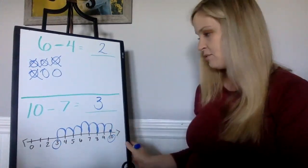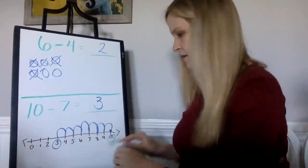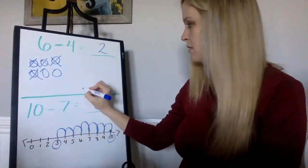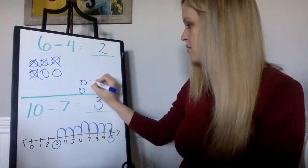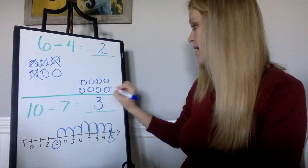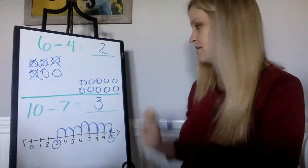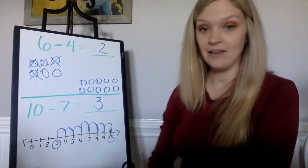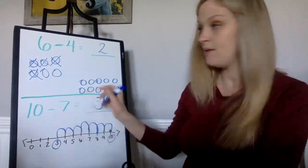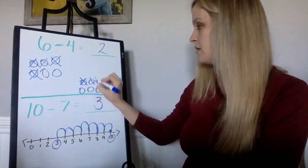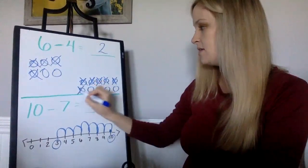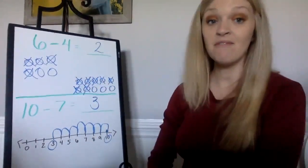So I'm going to draw 10: one, two, three, four, five, six, seven, eight, nine, ten. There's my 10. Minus 7, so I'm going to mark out 7: one, two, three, four, five, six, seven. I've marked out 7.